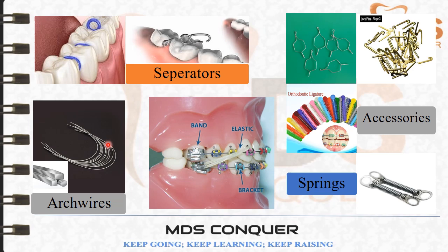Arch wires are active components made up of different materials such as stainless steel, copper NiTi, and beta titanium. They are available in different cross sections — they can be rectangular, square, or round wires; multi-axle wires are also available. The diagram shows different components including bands placed on the molars, elastics, brackets, arch wires, and elastic modules.